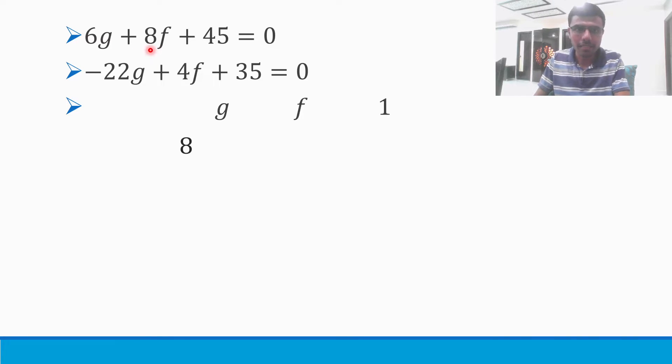First you need to write the coefficient of f of the first equation. The coefficient of f is 8. Next you need to write 45. Next come here, 6. Next again come to 8. Now here also in the second equation, first write the coefficient of f: 4. Then 35. Then -22. Then again 4.